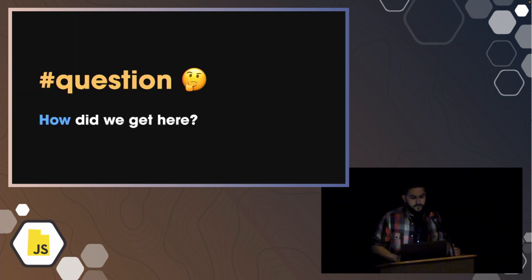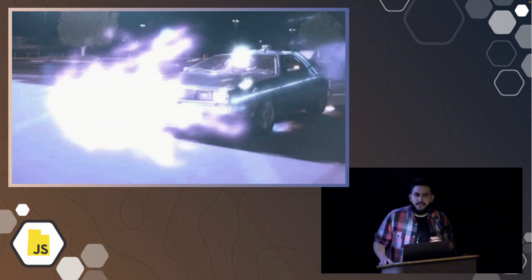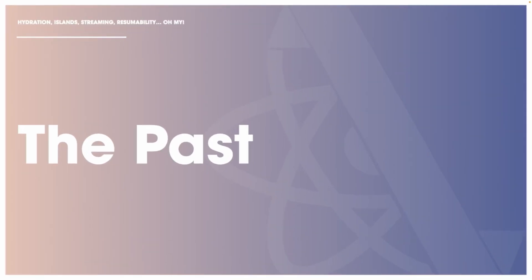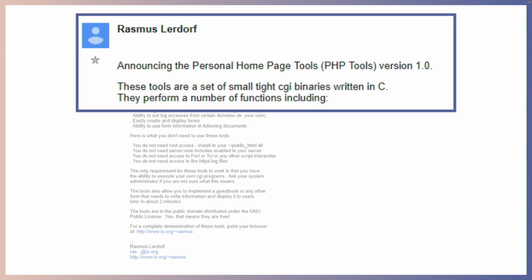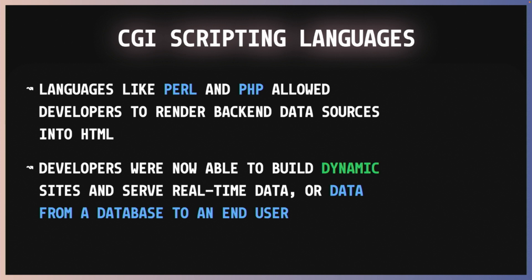I don't know about you, but I feel like how did we get here in the first place? So I'm going to do a little bit of a trip back in time. Let's talk about 1995, which was a year that a lot of interesting things happened and a lot of important milestones. I'm talking, of course, about PHP 1.0. CGI scripting languages like PHP and Perl were just great, because they allowed us to render our back-end data sources to HTML. So for the first time, we could grab some real-time data from a database and serve that to an end user. And that was great.